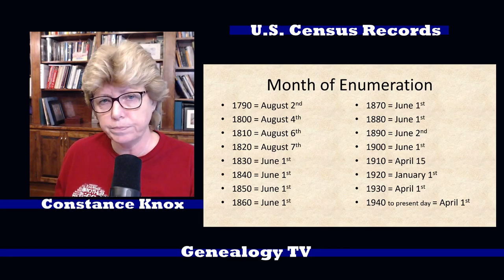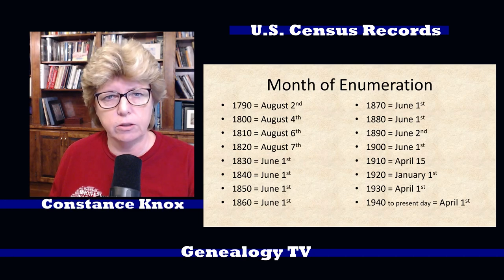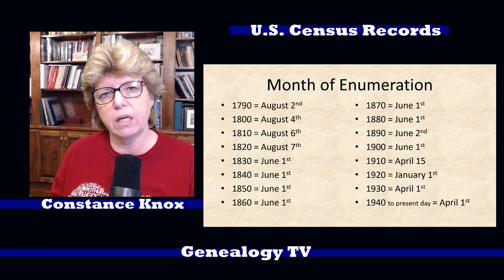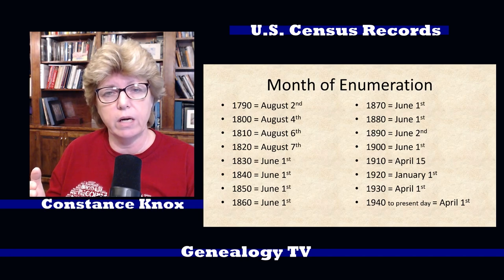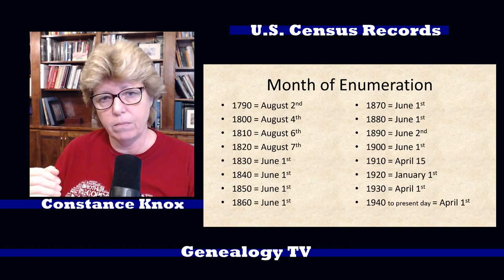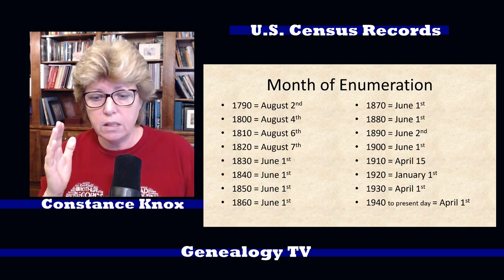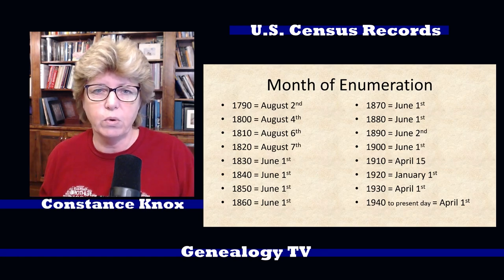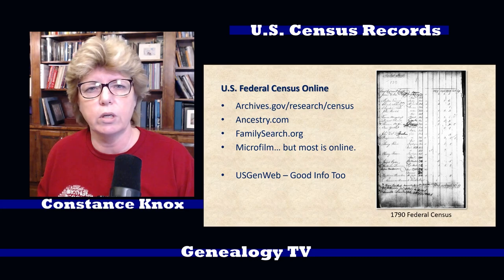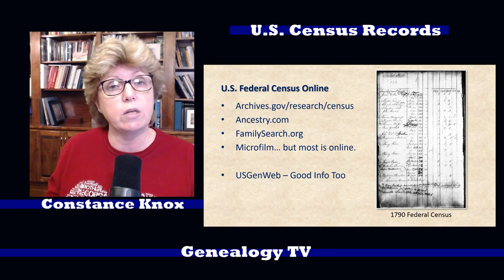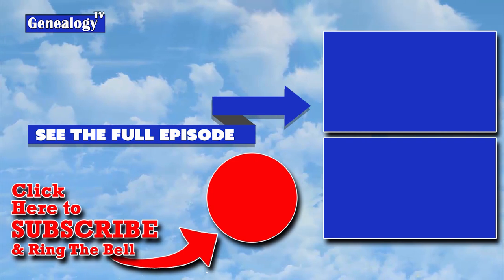The reason this matters is: if a person is listed as seven years old but hasn't had their birthday yet, it will make a difference when you're estimating their birth year. Whatever the age of the person was at the time the enumerator walked around will determine what year they were born. It's important to note on each record you're working on what the enumeration month and day was at the top of the schedule.